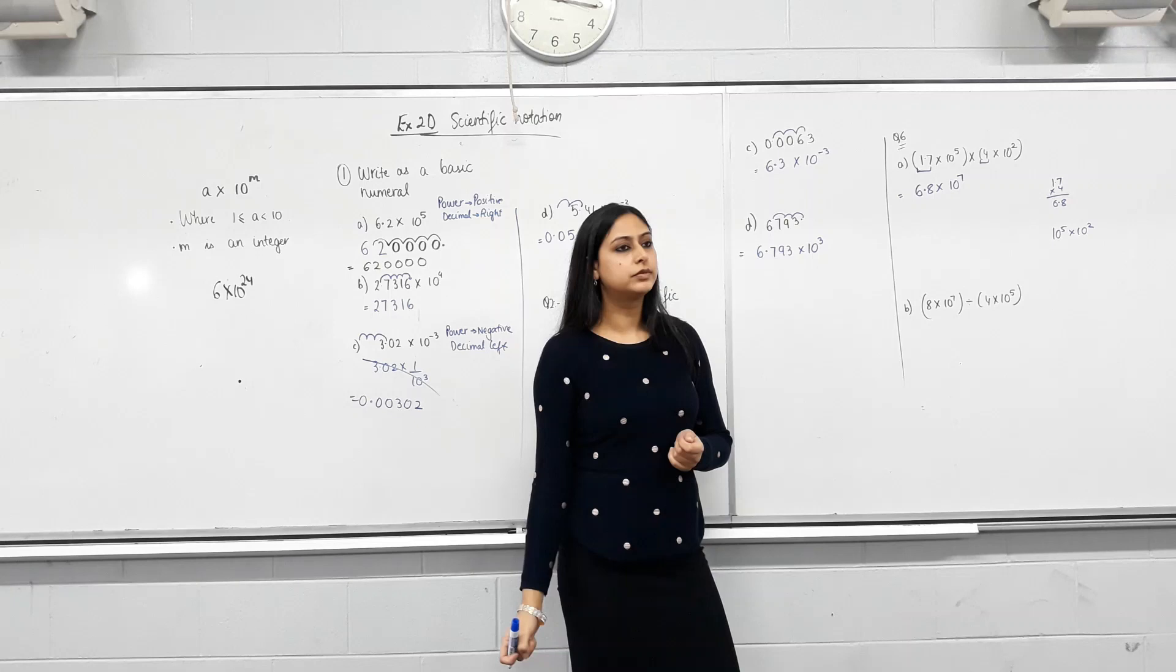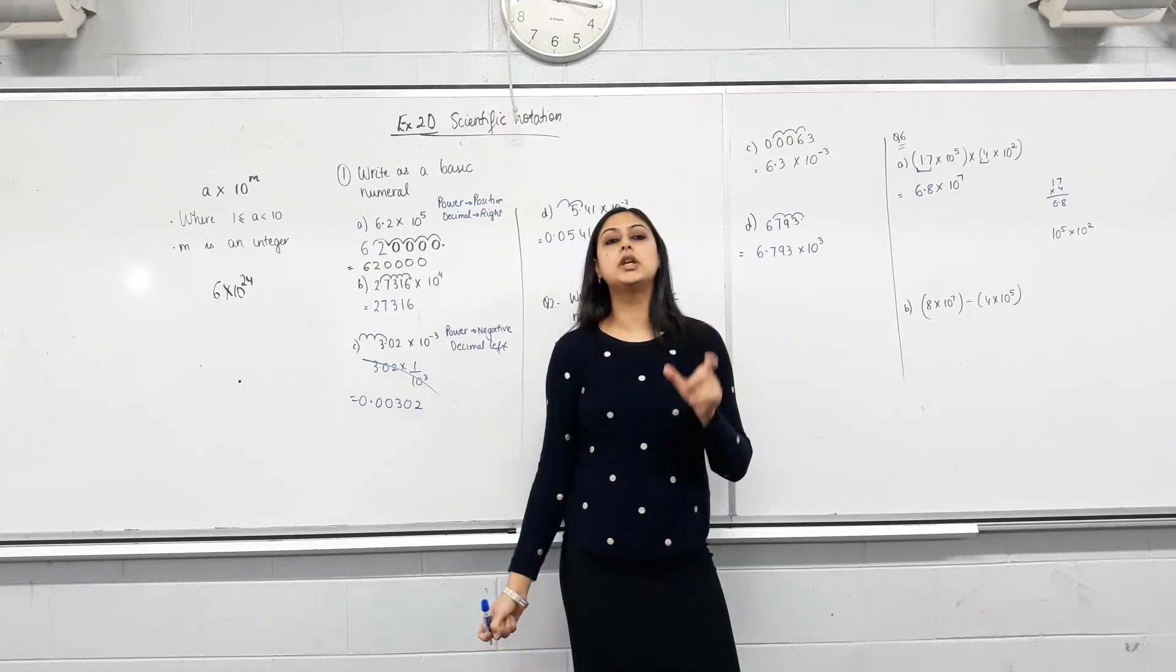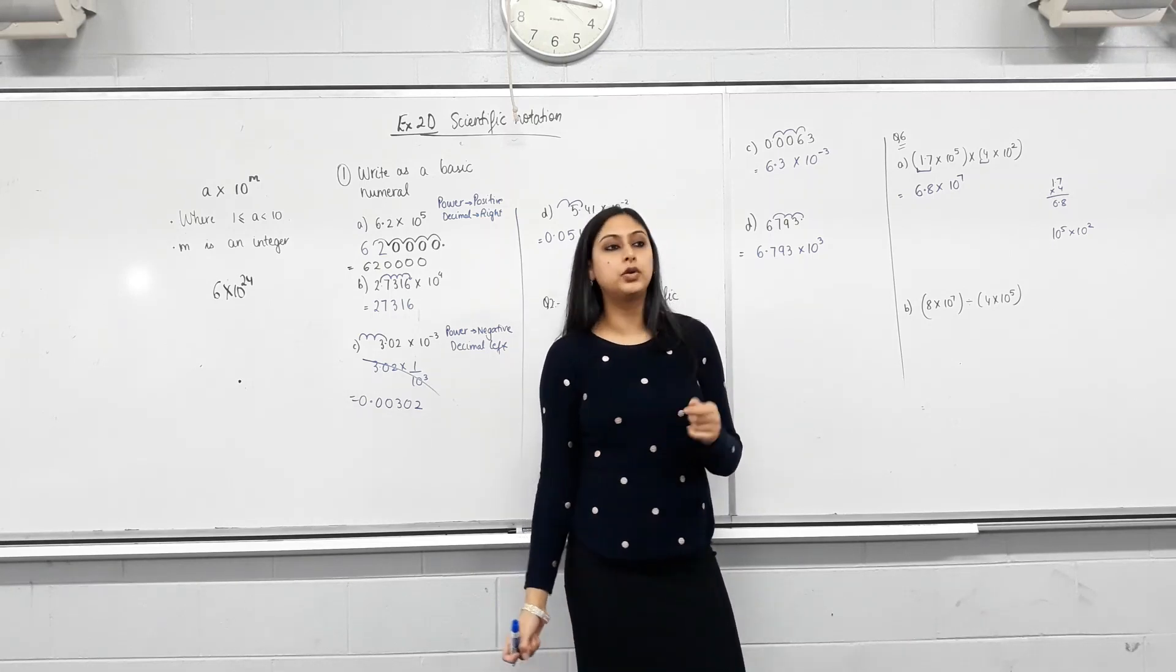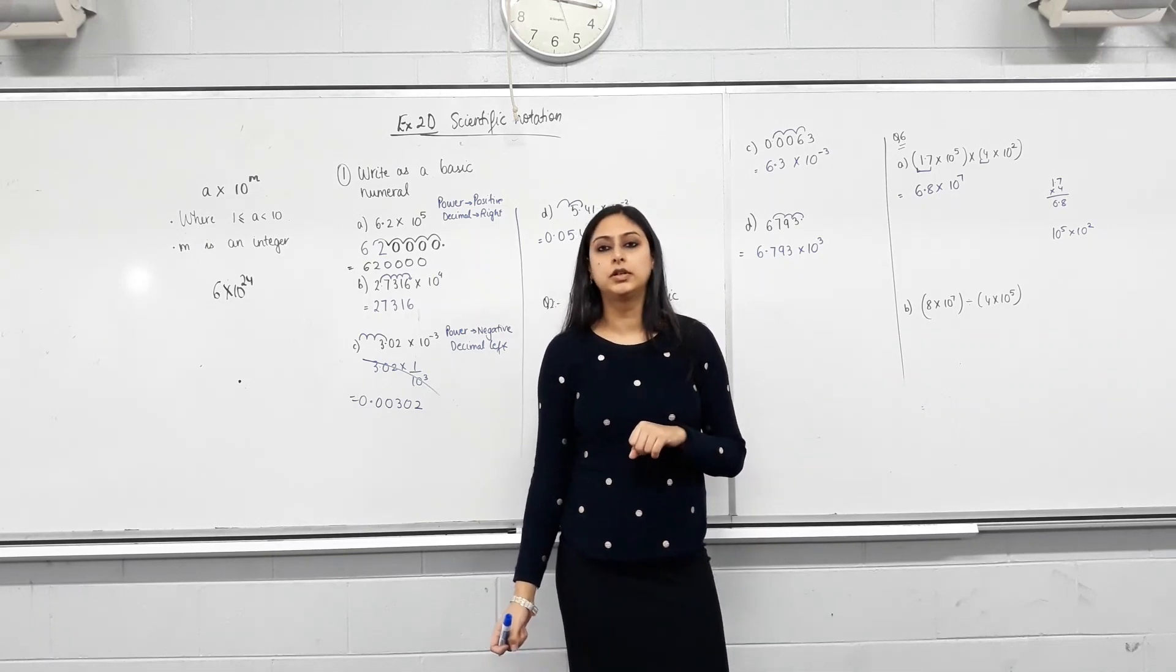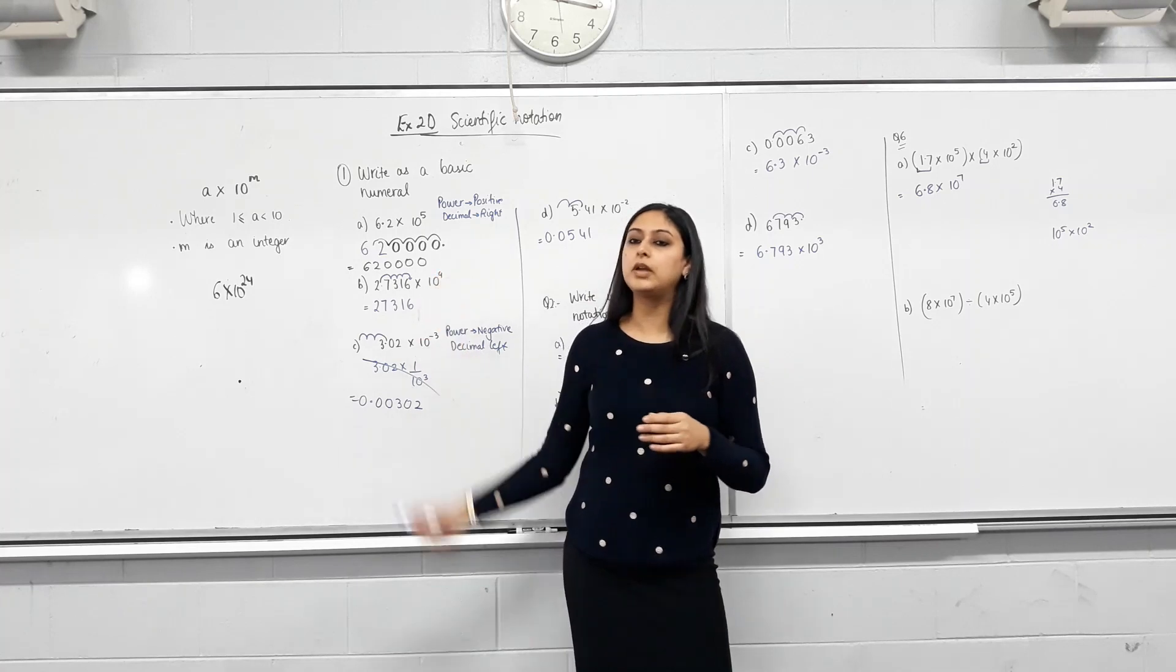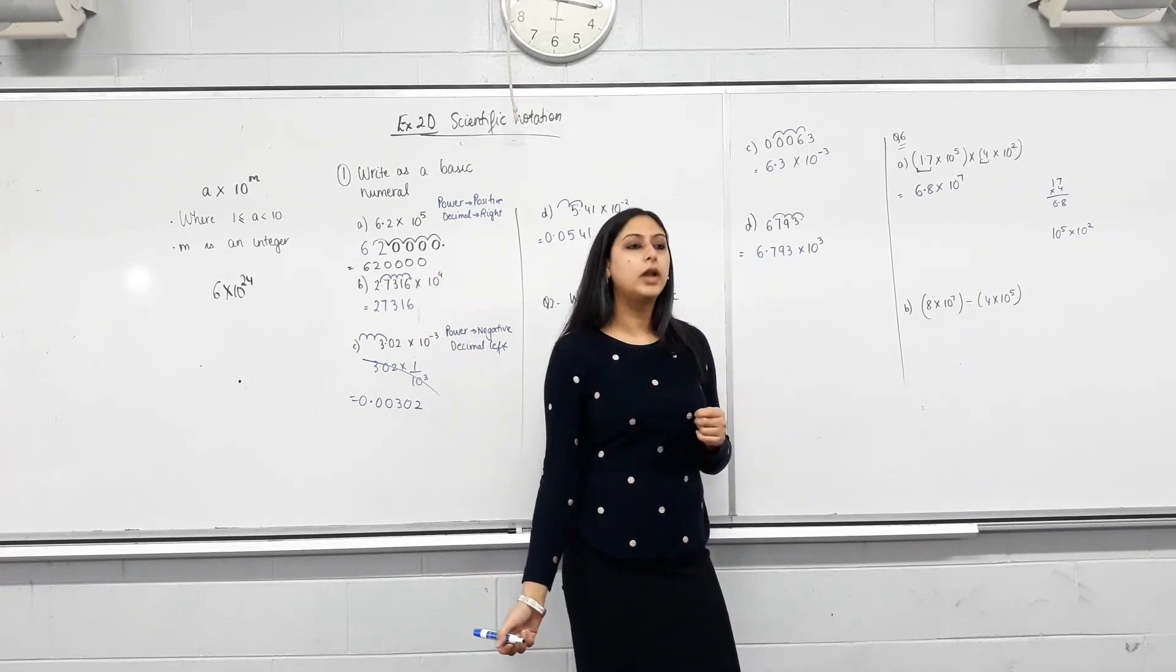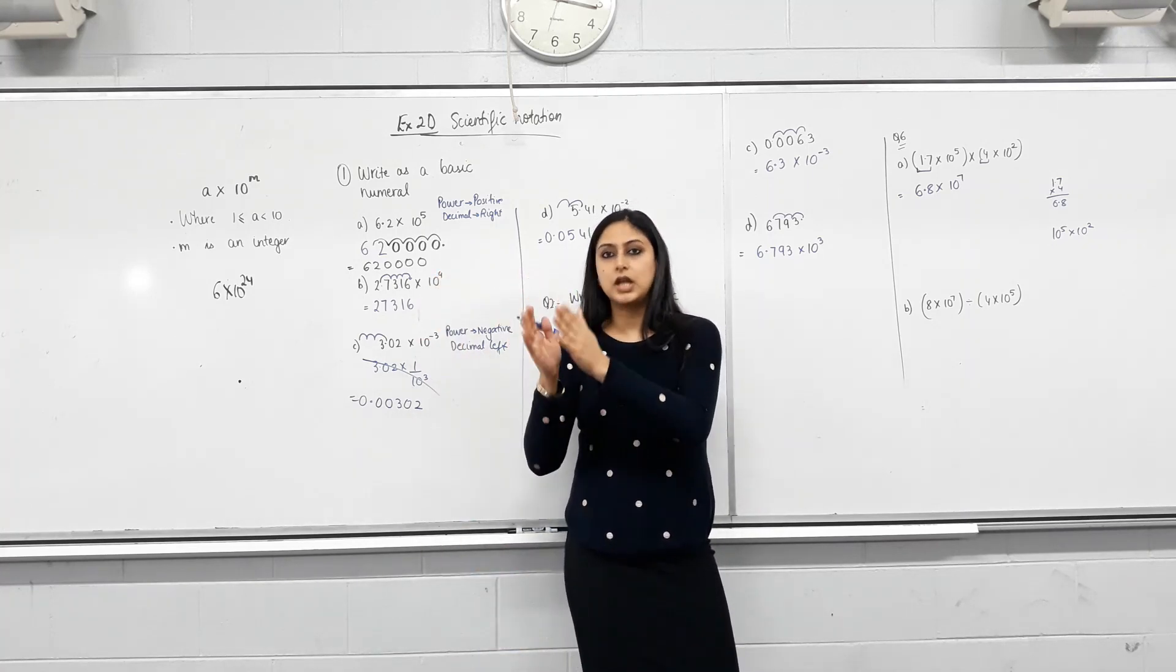Because of scientific notation. So scientific notation is good to represent numbers that are too big or too small and they also help make our calculations easier with those numbers. Because they have the same base. Every number written in the scientific notation will have base 10, you know, 10 to the power of something.